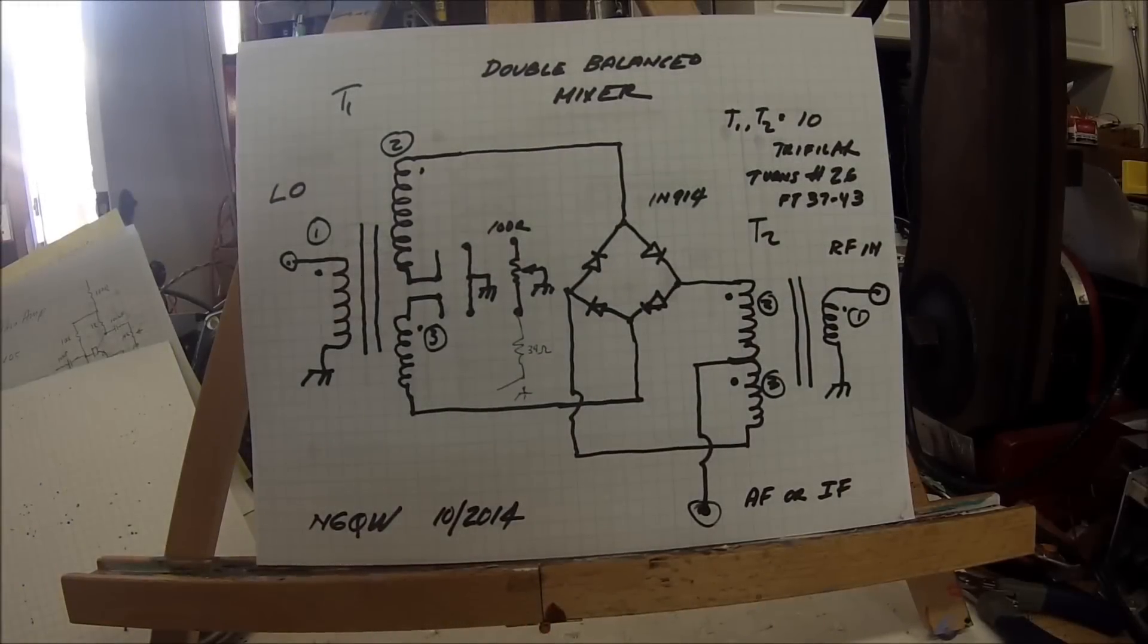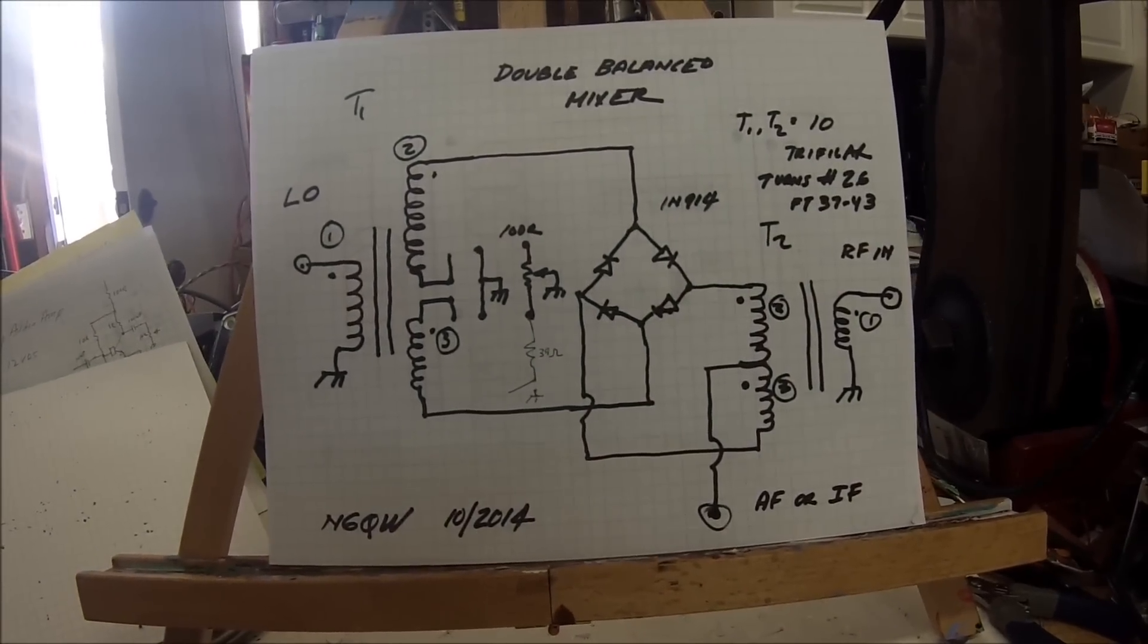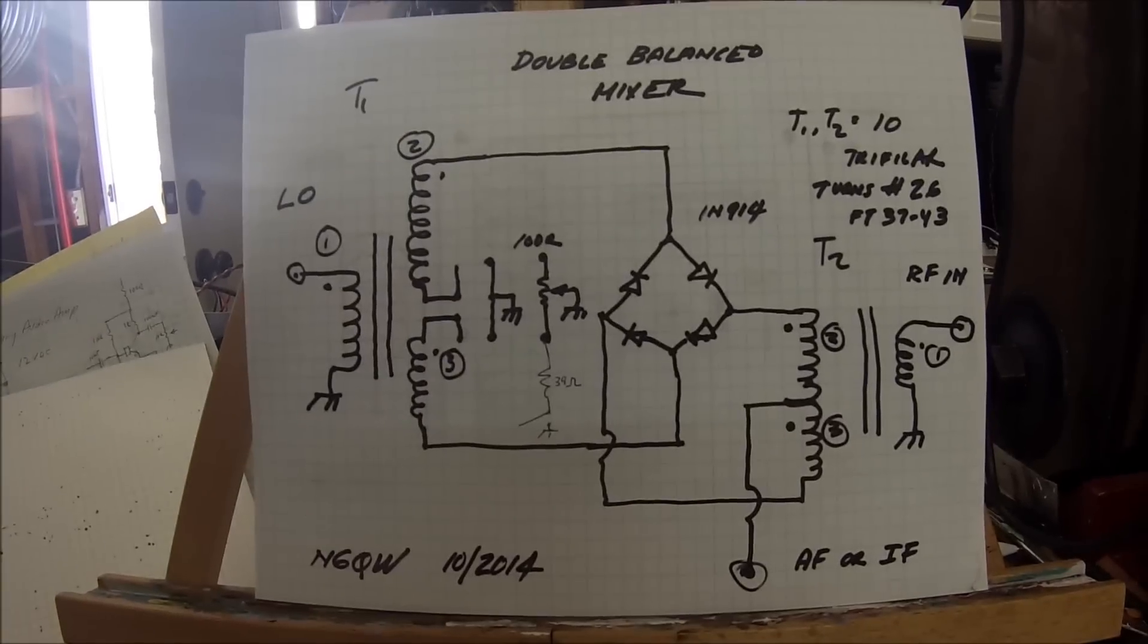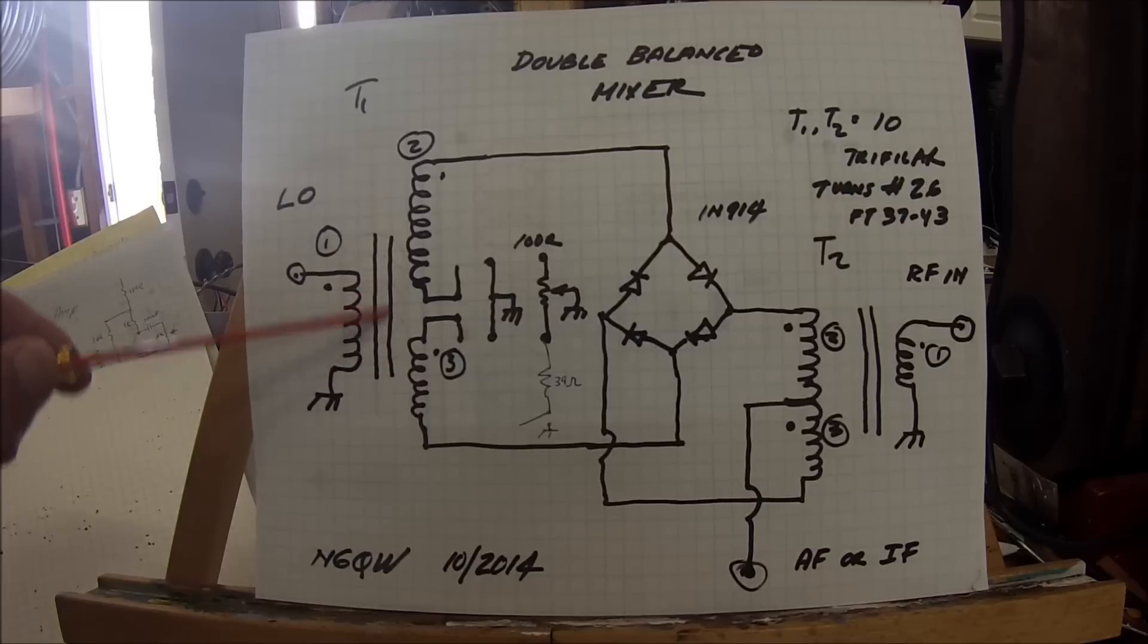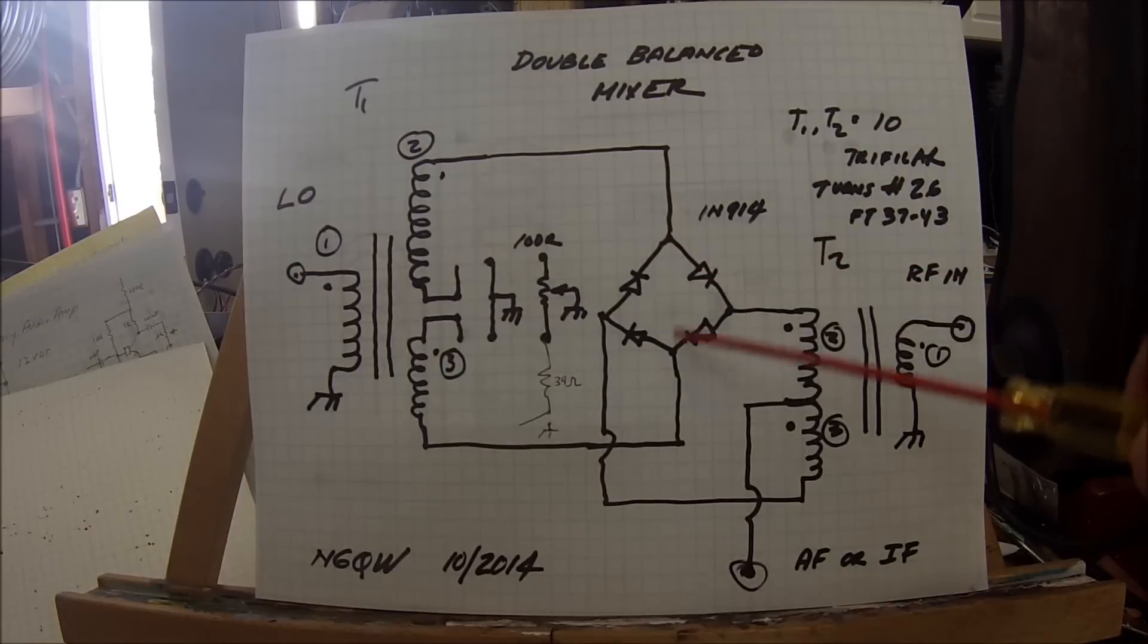Hi guys, this is Pete N6QW and we're moving on to part two of our video on building double balanced mixers. I'd like to review first the schematic diagram of the double balanced mixer. Essentially what we have is a tri-filar wound ferrite transformer, which is the local oscillator input.